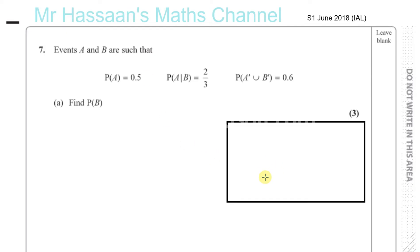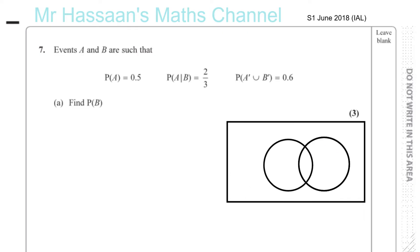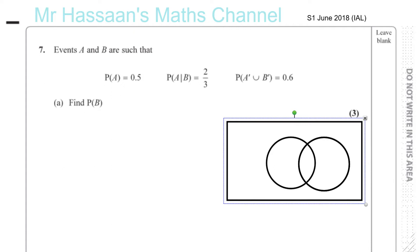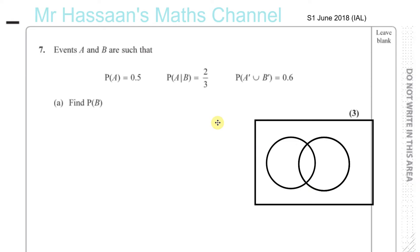So we've got set A and set B. From this information, what we know is the probability of A is 0.5. So this whole circle is 0.5. I can't write that down right now because it includes both of these areas.